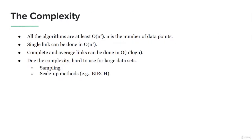Regarding the complexity of these algorithms, they are all in polynomial time complexity. Single link can be done in O(n²), and average link can be done in O(n² log n). The complexity is very high and it takes a lot of time, so we cannot use these methods on large data sets. Instead, we do sampling — taking small samples from the large data set and applying the same method — or use scale-up methods like BIRCH.